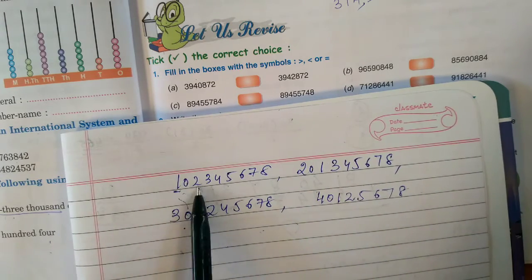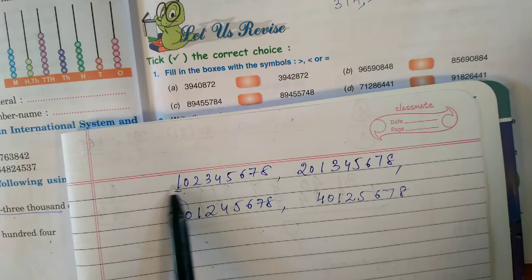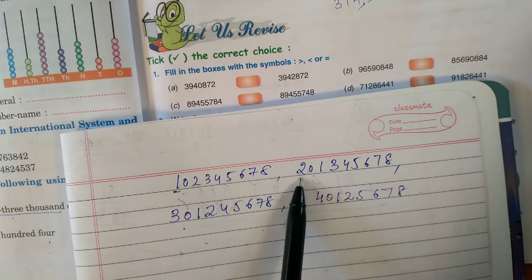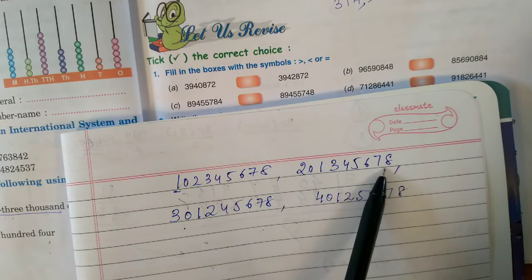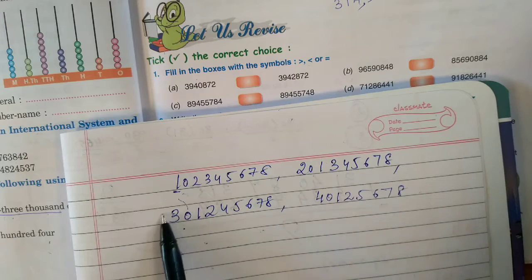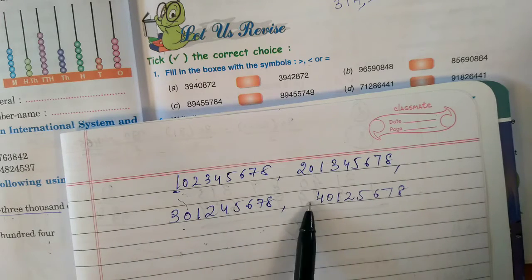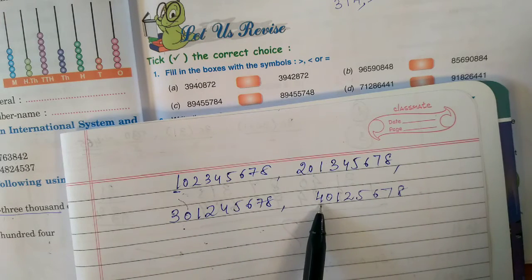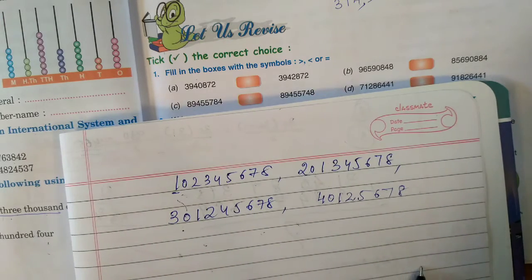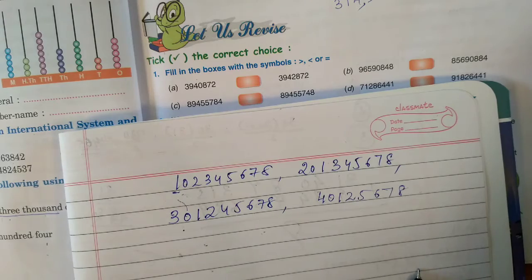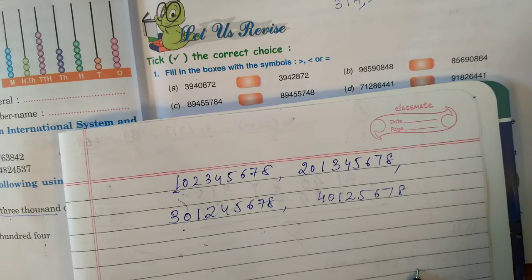Replace 1 with 2 and 2 with 1. So: 2, 0, 1, 3, 4, 5, 6, 7, 8 — that is the next smallest number. After that we will start with 3, then with 4, and like this way you will write your numbers.